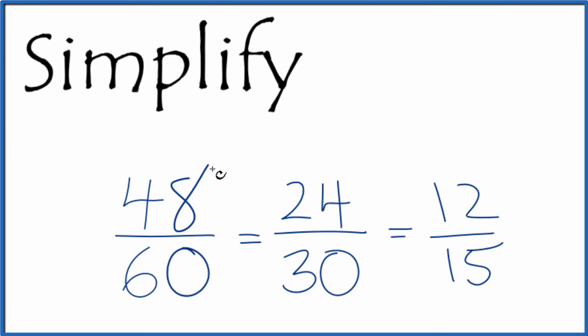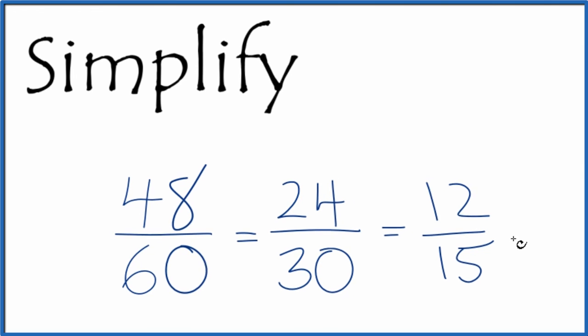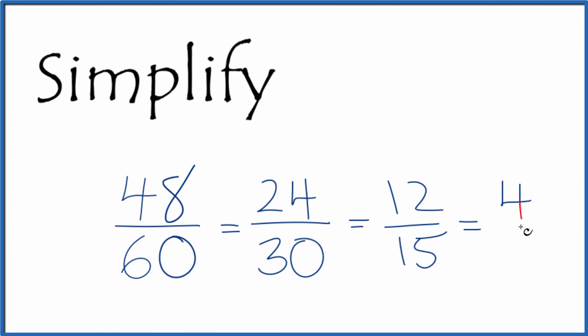So sometimes if you have a fraction like this, it's helpful to simplify it a little bit until you get to something more manageable. Either way, when we simplify the fraction 48 over 60, we end up with four fifths.